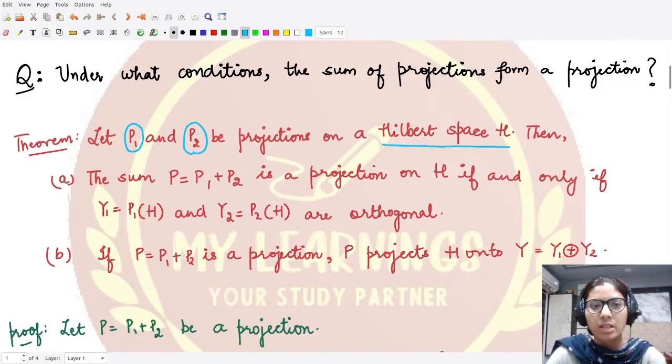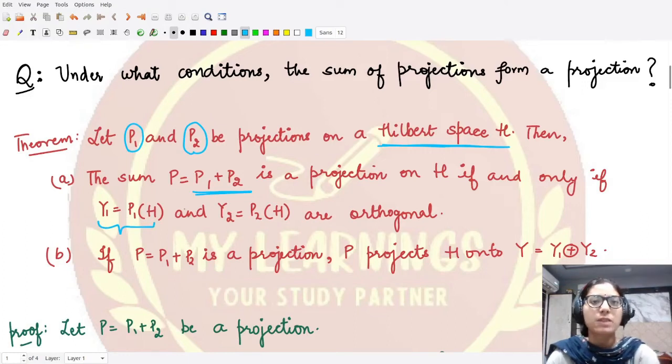Both the subspaces Y1—Y1 is that subspace where P1 projects H onto—and Y2 is that subspace where P2 projects H onto.